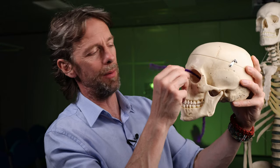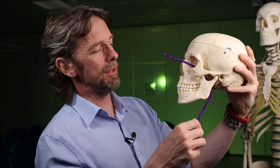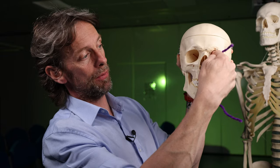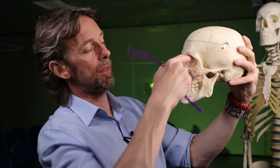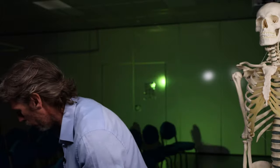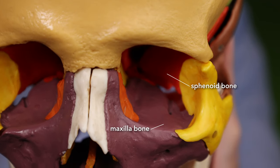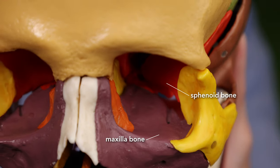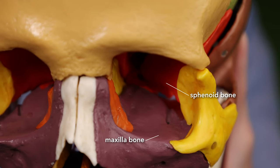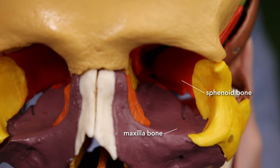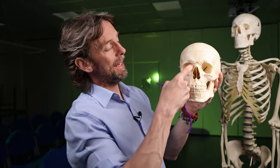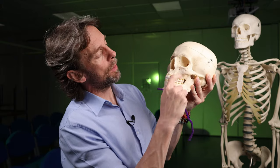The pterygopalatine ganglion sends some branches up through the inferior orbital fissure — there's a zygomatic branch of the maxillary nerve that passes through — but the major thing to note is venous drainage from the orbit to the deep face through there. The inferior orbital fissure is actually a gap formed between the sphenoid bone and the maxilla, combining inferior to the orbit.